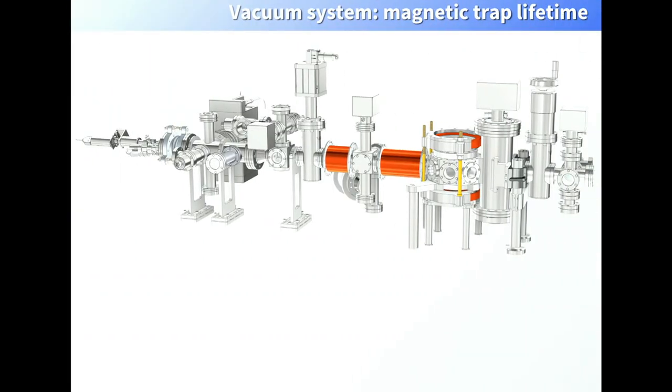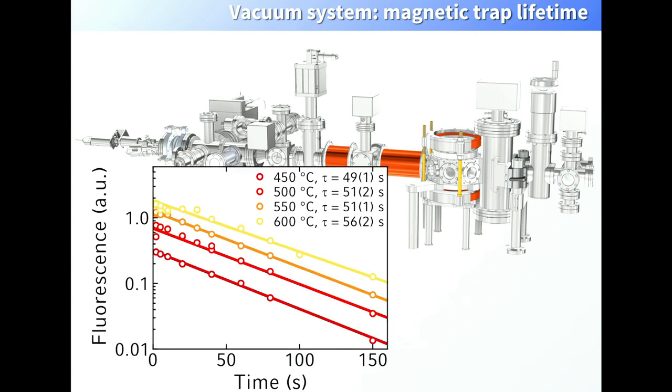Of course, that's not the only thing we're doing. This is our vacuum system as it looks currently. There's a lot of technical enhancements that are maybe not so important right now. What is important is that we've measured the lifetime in this vacuum chamber to be better than a minute in a magnetic trap. That will help us to also work with the rare bosonic isotope of strontium that we would like to address as well.